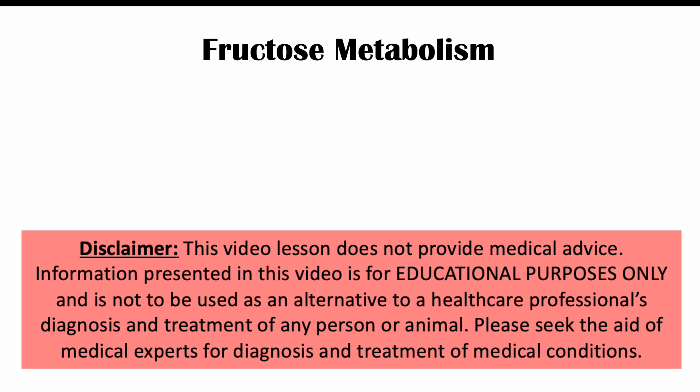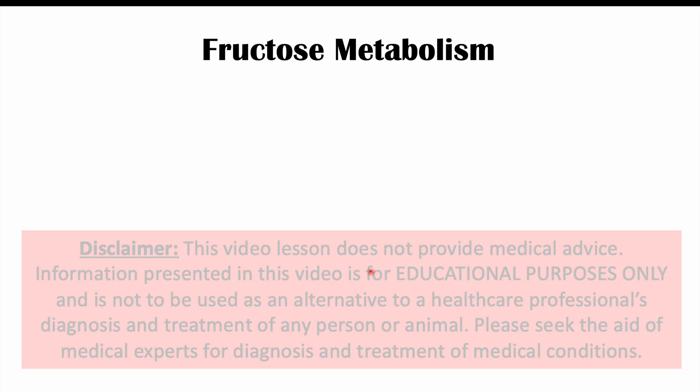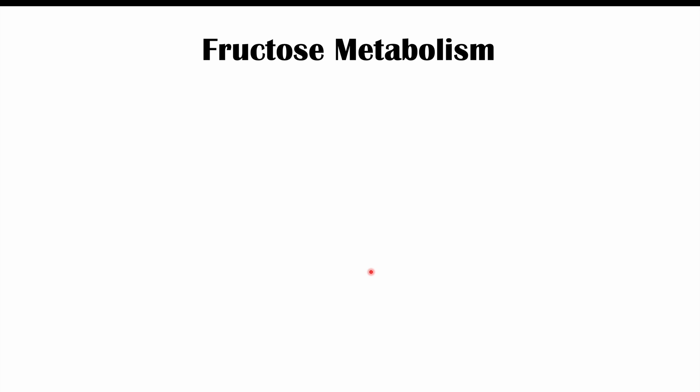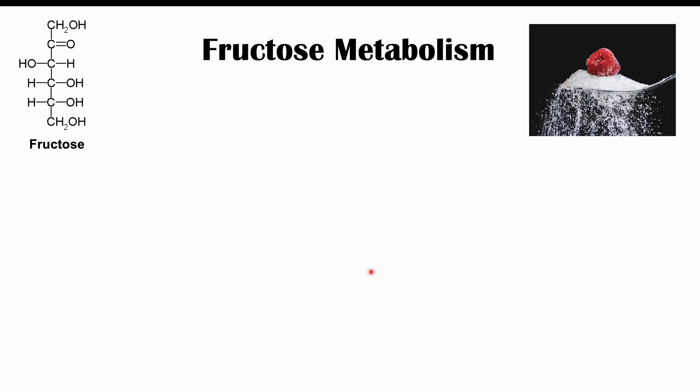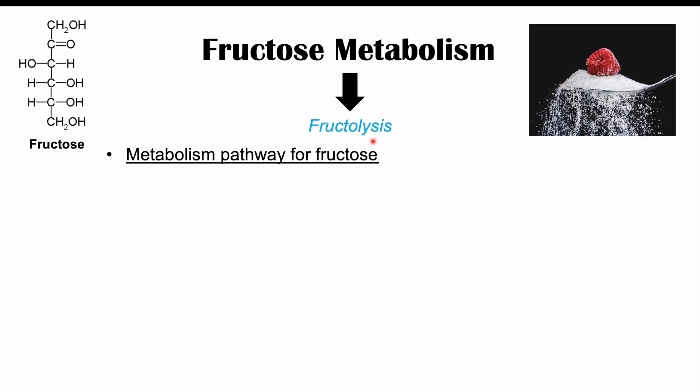This lesson is on disorders of fructose metabolism. We're going to talk about two genetic disorders that can affect fructose metabolism that are important to know about. Before we discuss those two genetic conditions, let's talk about what fructose metabolism is and how it operates. Fructose metabolism is also known as fructolysis — the breakdown of fructose — and it is a dedicated metabolism pathway for fructose.